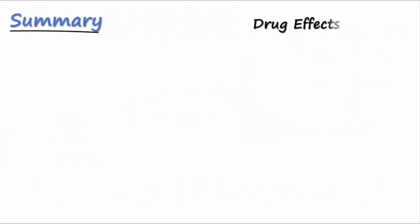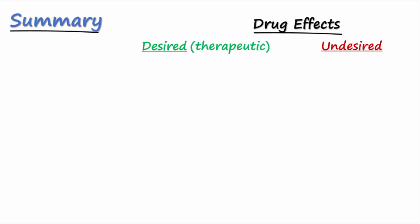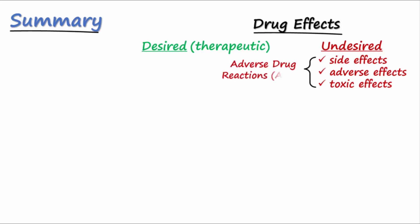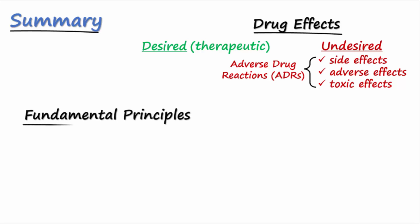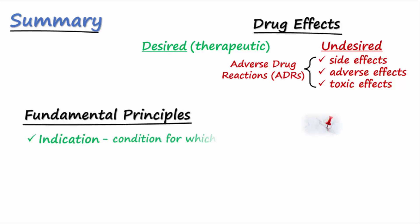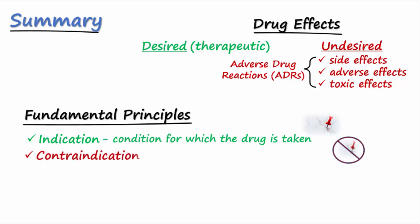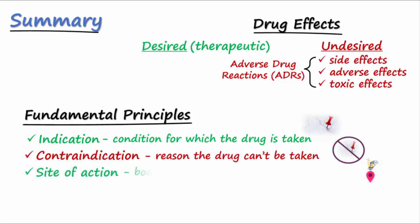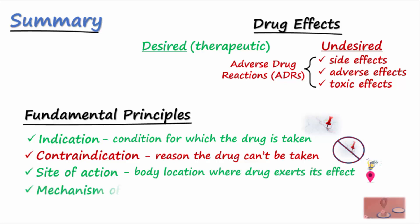In summary, we've discussed drug effects, including both desired and undesired effects. Desired effects are the reason the drug is taken, or the therapeutic effect. Undesired effects include side effects, adverse effects, and toxic effects, also known as ADRs. Fundamental principles of pharmacology include indication, which is the reason the drug is taken; contraindication, which prohibits the drug from being used by a certain patient; site of action, the location in the body where the drug exerts its effect; and mechanism of action, or MOA, which describes how the drug exerts its effect.